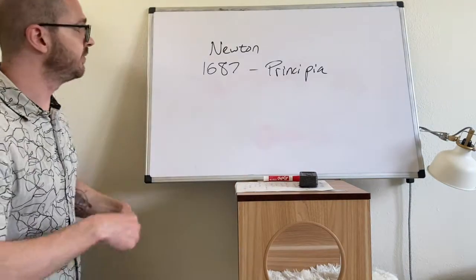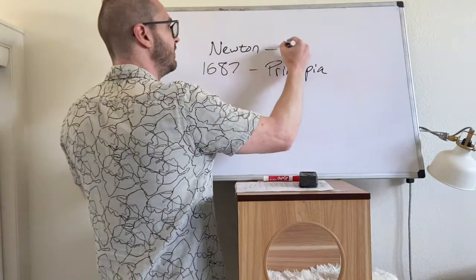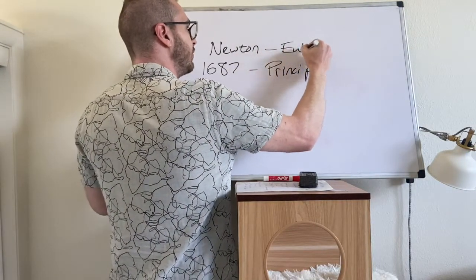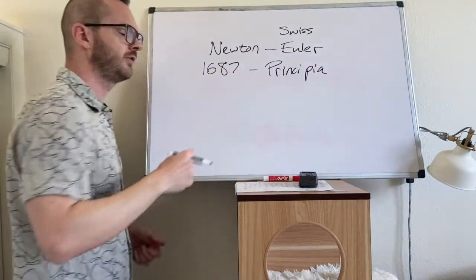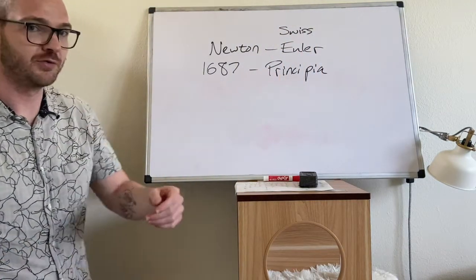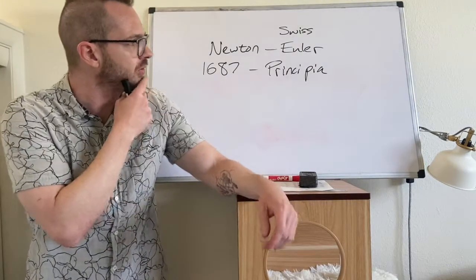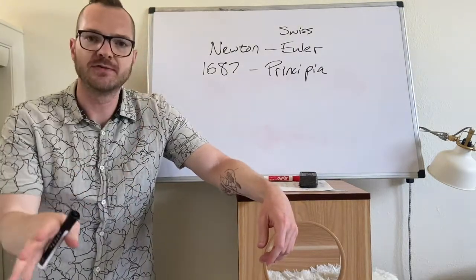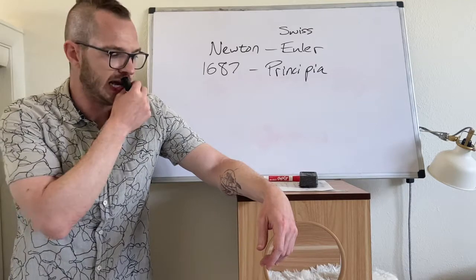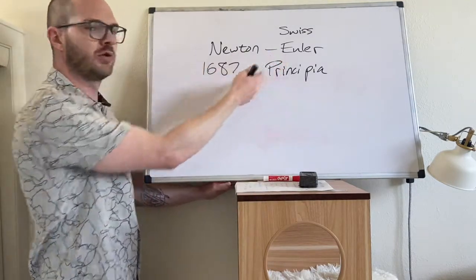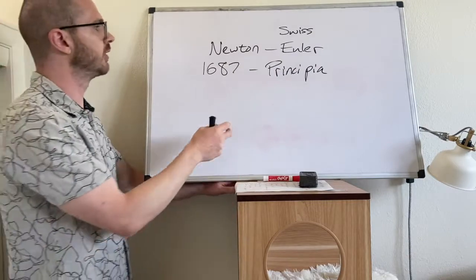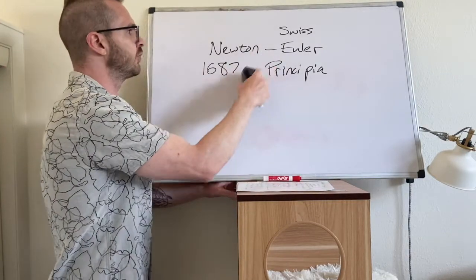And when this man did, his name was Euler, Swiss. It's not pronounced Euler, it's Euler. Euler comes along and he makes his contributions to Newton's work. And today, when we look at it, we call them the Newton-Euler equations. So when you see that Newton-Euler, that's these two guys that we're talking about.